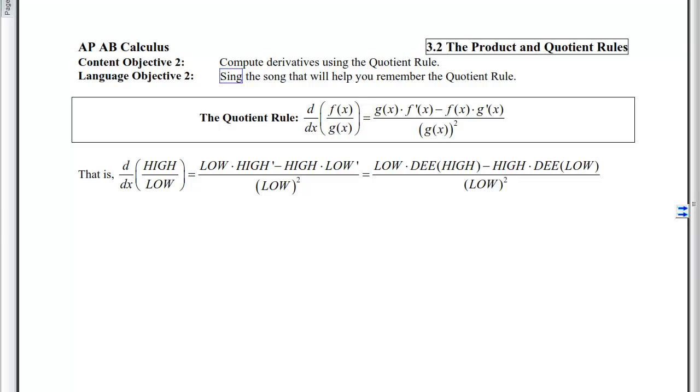This is Section 3.2, the Product and Quotient Rules, Objective 2, which is to compute derivatives using the Quotient Rule. The language objective we won't do until class because we're going to sing a song that helps you remember the Quotient Rule. Until then, I'm going to teach you this mnemonic device to help you take the derivative of High over Low. It will equal Low times the Derivative of the High minus High times the Derivative of the Low over Low Squared. People often refer to this as the Low D High Rule.